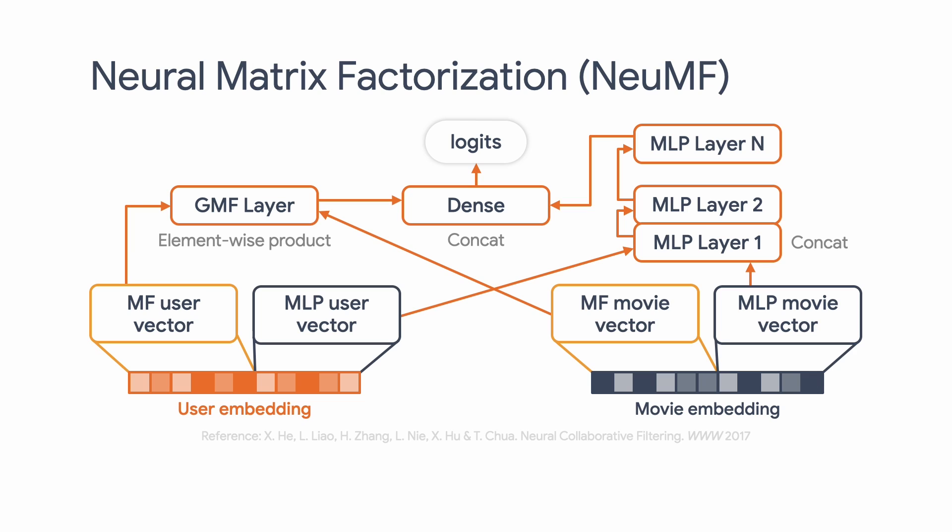Architecture-wise, NeuMF is an ensemble of generalized matrix factorization, GMF, and multi-layer perceptron, MLP. GMF applies a linear kernel to model the latent feature interaction, and MLP applies a nonlinear kernel to learn the interaction function from data.